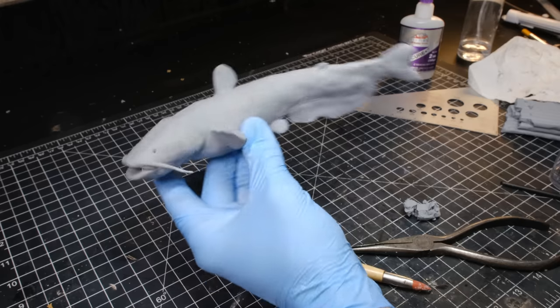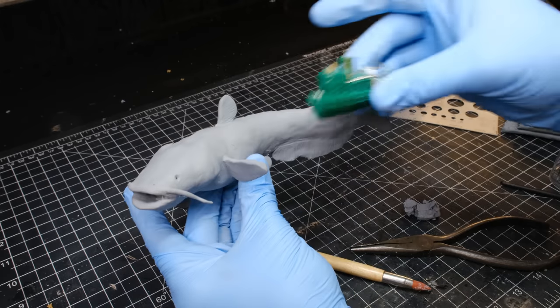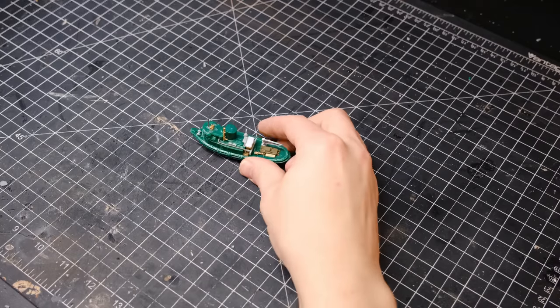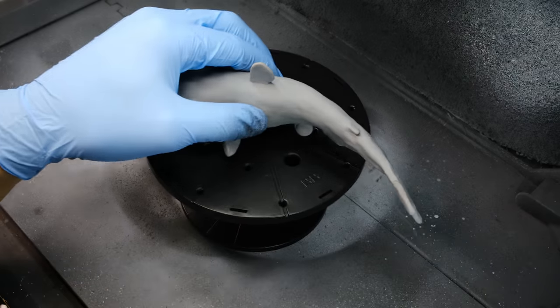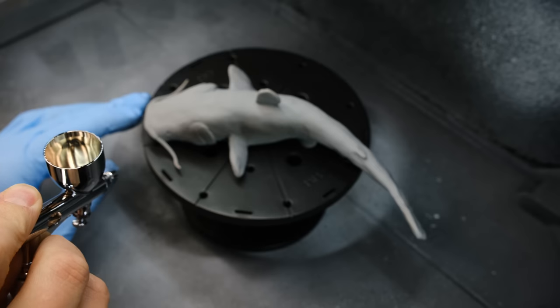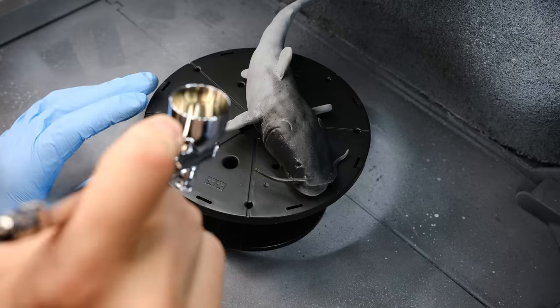After the sculpt was done, I baked the fish and I took the boat and the fish outside to prime. I did prime the boat outside, but I read online that spray paint is bad for Sculpey. It becomes sticky or tacky, so I brought it back inside and I primed it with acrylic paint instead.